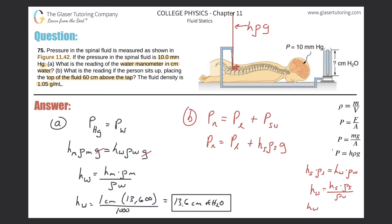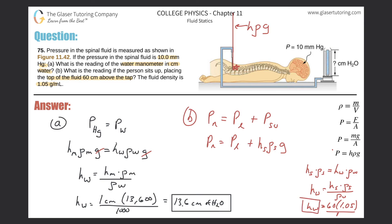I want the height in centimeters of water, and they gave the spinal fluid height as 60 centimeters, so I plug in 60. For density of spinal fluid I use 1.05 grams per milliliter, and for density of water I use 1.00 grams per milliliter — keeping units consistent. So the equivalent height of water is 60 times 1.05 divided by 1.00.